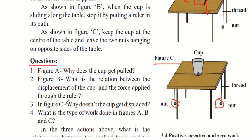In figure C, the cup doesn't get displaced because there is equal force acting on both sides of the string. The forces cancel each other out, leaving zero net force on the cup, so the cup does not move either right or left.